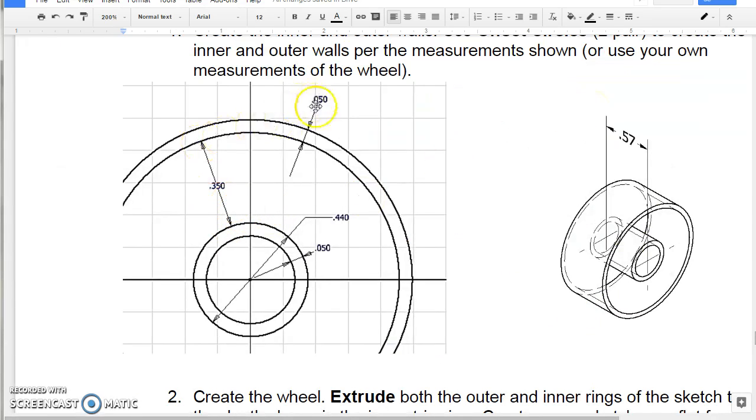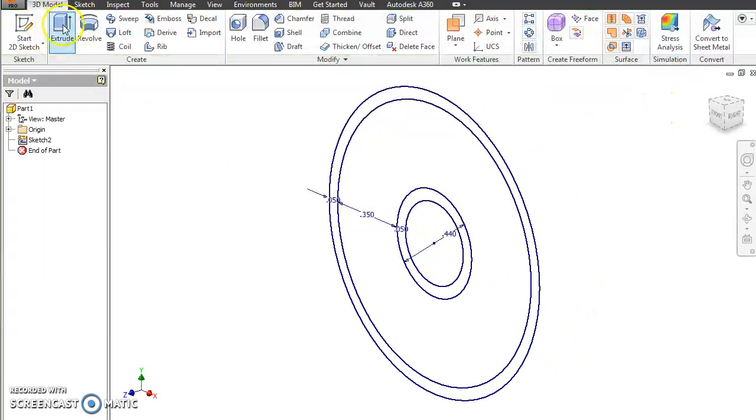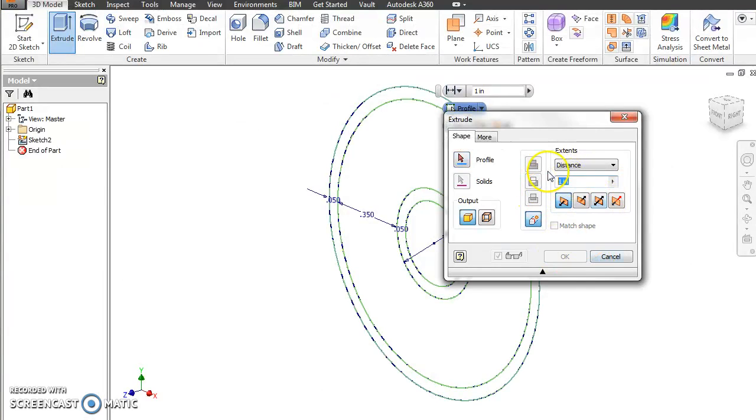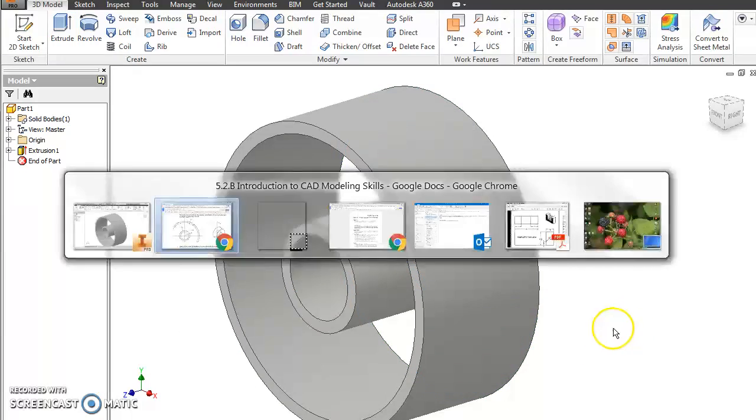So once we have that laid out, then we'll just finish our sketch, go back and extrude it, and we're going to extrude it .57. And we're going to make sure to select our inner and outer circles. So that starts the wheel.